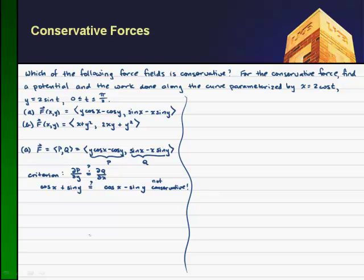So let's try part b. We have x plus y squared and 2xy plus y squared, where this is my p and this is my q. Well, in this example, if I take the partial of p with respect to y, I get 2y. And if I take the partial of q with respect to x, I also get 2y. So this checks out. It's obviously a conservative force field.